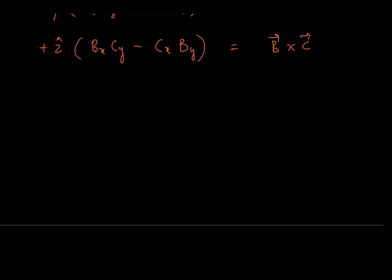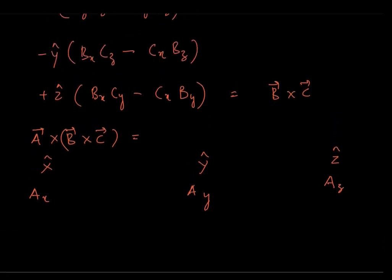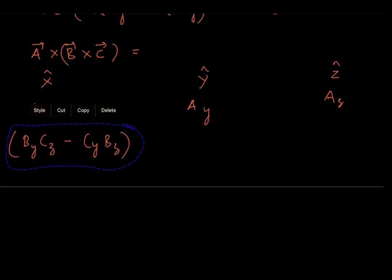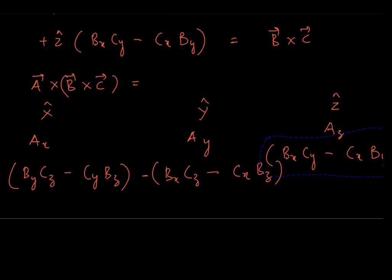Now let's go ahead and find A cross (B cross C). To find that, we will use a very similar matrix, with A_X, A_Y, A_Z as the components in one row, and the components of (B cross C) as the other row. The X component of (B cross C), the Y component of (B cross C) with a minus sign, and finally the Z component of (B cross C) are placed in the matrix.